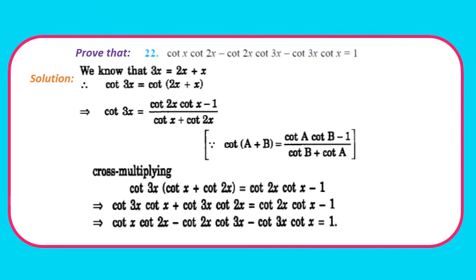Question 22: Prove cotx·cot2x − cot2x·cot3x − cot3x·cotx = 1. Since 3x = 2x + x, we apply the identity cot(A+B) = (cotA cotB − 1)/(cotB + cotA): cot3x = (cot2x·cotx − 1)/(cotx + cot2x). Multiplying both sides by (cotx + cot2x): cot3x·cotx + cot3x·cot2x = cot2x·cotx − 1. Transposing gives cotx·cot2x − cot2x·cot3x − cot3x·cotx = 1. Hence proved. Pause and note down the solution.